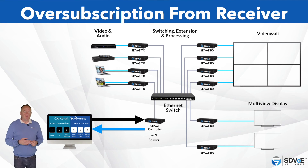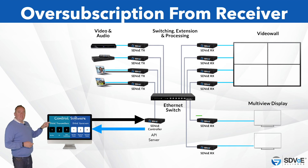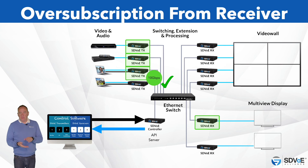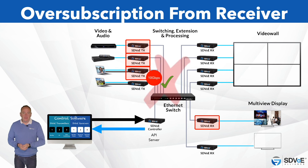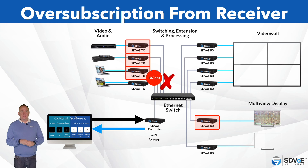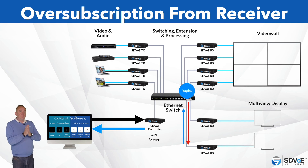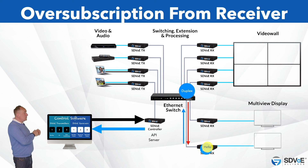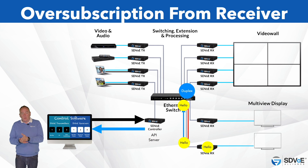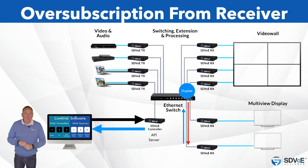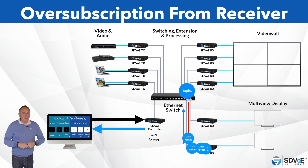Now let's look at how oversubscription could occur from a decoder or receiver device. In this example, receiver C is sending a multiview image to the display by connecting to three separate streams from transmitters A, B, and C. As we learned in the Multiview Explained course, it's important to ensure that the total bandwidth of these streams will not exceed the total bandwidth available to prevent oversubscription. Remember, network connections are duplex — they work in both directions, transmit and receive. It's also possible to oversubscribe a receiver and yet still see a healthy endpoint on your software, because the hello packets are moving in a completely different direction to the video packets.